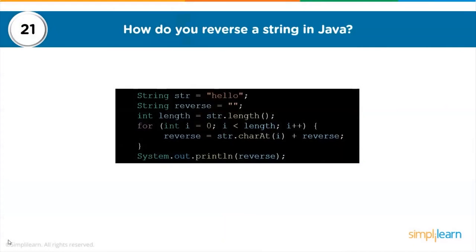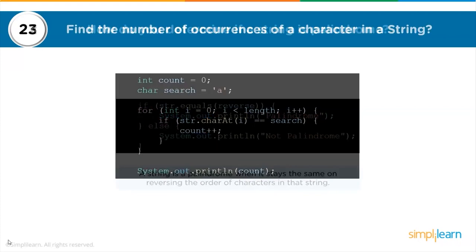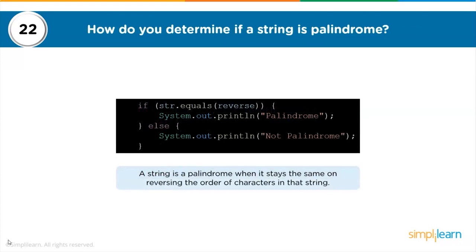The first programming question is: how do you reverse a string in Java? You declare a string, take its length, loop through the characters, add them in reverse order, then print the resultant string. The next question is: how do you determine if a string is a palindrome? A string is a palindrome when it stays the same when characters are reversed. This is achieved by reversing the original string and then checking if the reversed string equals the original.